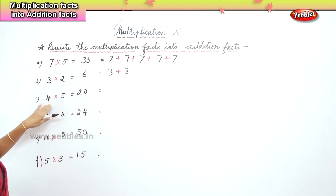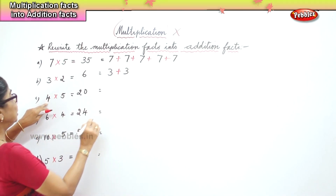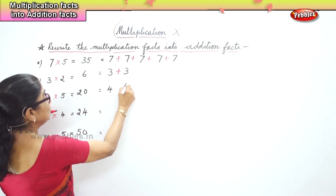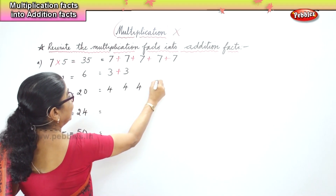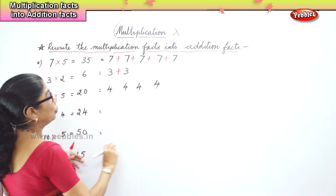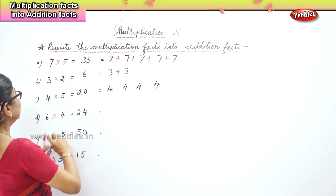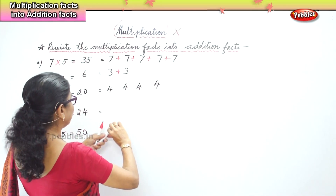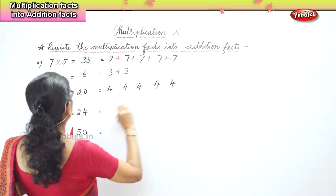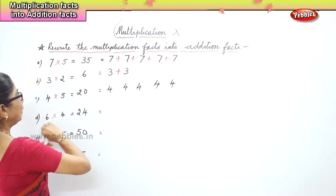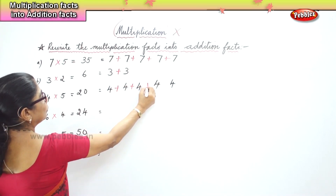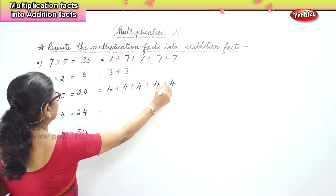Next, four. Number four, how many times? Five times. One, two, three, four, five. So four plus four plus four plus four plus four.